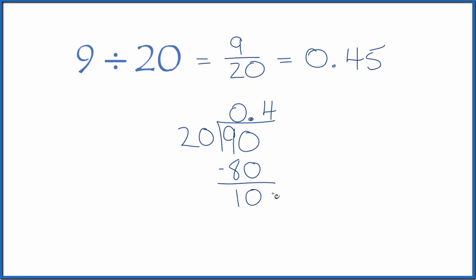20 doesn't go into 10. Let's call it 100, move over 1, and 5 times 20, that's 100. Subtract, no remainder.